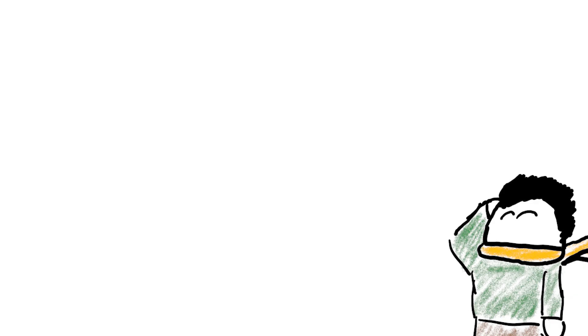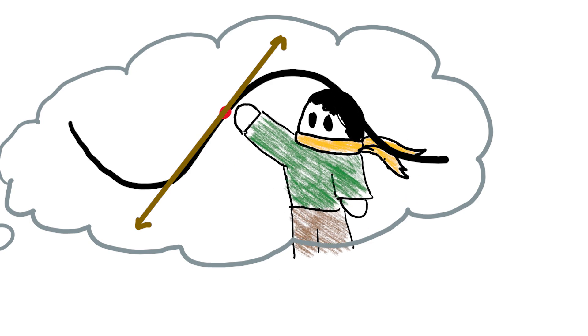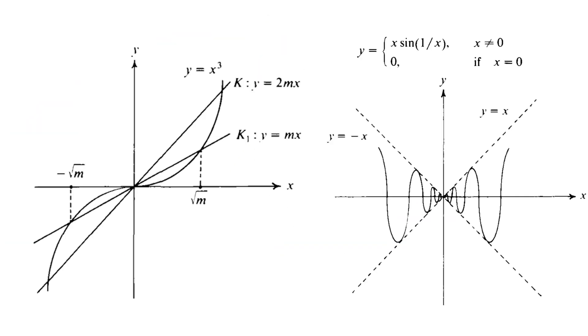He claims that we already had this intuition, as this is how we drew the tangent line in the first example. We tried to guess the line that best approximates the curve. He uses this to prove tangent lines of some well-known curves.